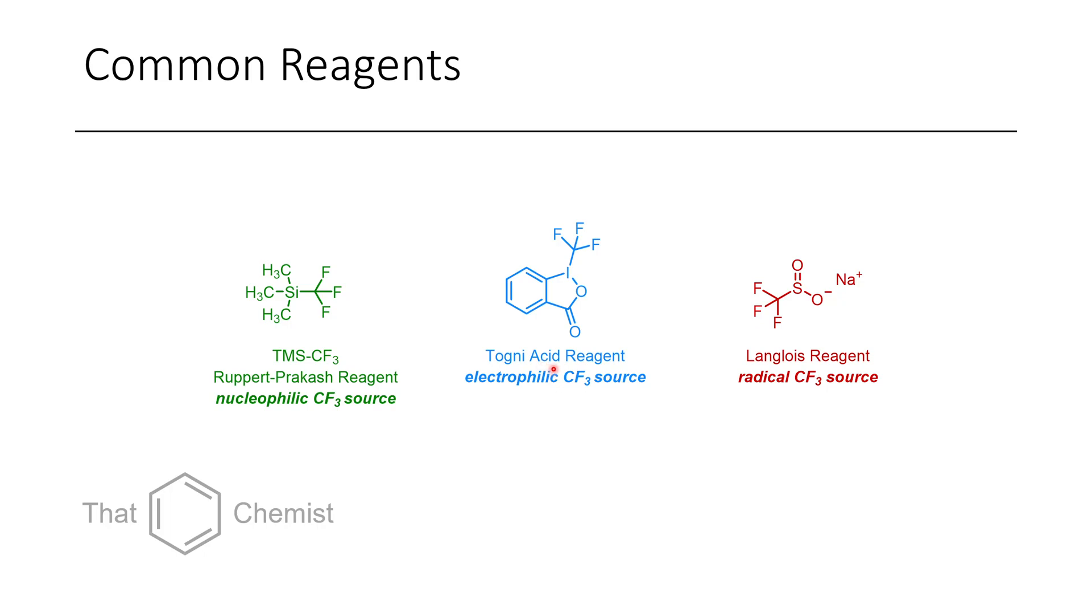Depending on your application, you might use different variants. Another approach is to use a radical CF3 source. This is Lenglois reagent, which can be activated using certain oxidants or photochemical conditions, which then liberates a CF3 radical. All three of these reagents have been quite important in the development of modern fluorine chemistry.